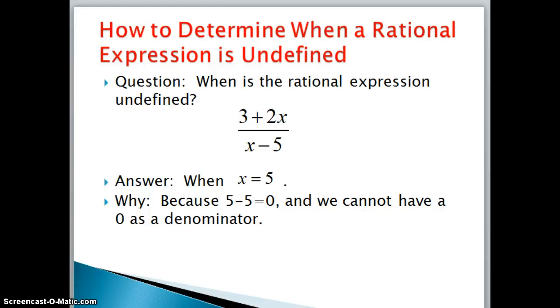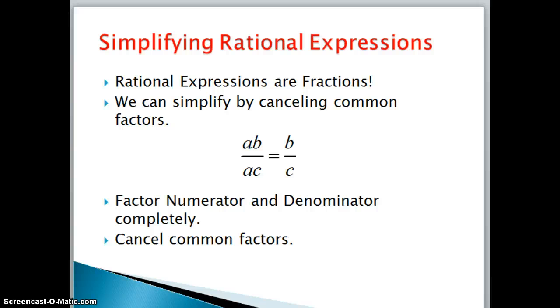Now this will become more important later on when we're solving rational equations. For now, we're going to just focus on simplifying rational expressions. And as I said before, rational expressions are just fractions. So we are going to simplify them in the very same way, by canceling common factors. So in this very simple example here, if we have the expression ab over ac, we have a common factor of a, we can cancel out that common factor, and we're left with b over c.